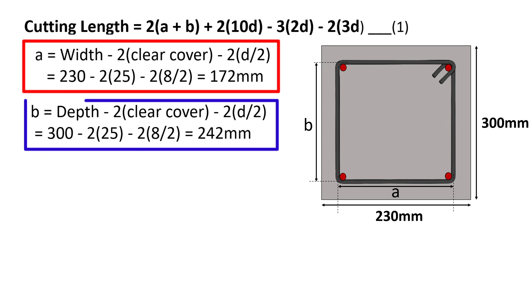Similarly, b equals depth of beam minus 2(clear cover) minus 2(d/2), and the total will be 242 mm.